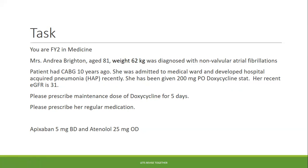Looking at the task, there is some important information here. She is an elderly lady, weight 62 kg, diagnosed with non-valvular AFib. She recently had an infection and has been given doxycycline. The stat dose has already been given, and we need to prescribe the maintenance dose for 5 days. Regular meds are Apixaban and Atenolol. The first thing to do is check for interactions between any of these medications, and if there are any, change accordingly.